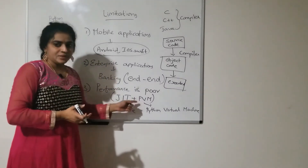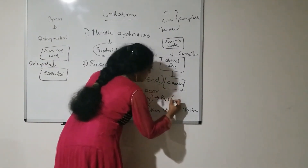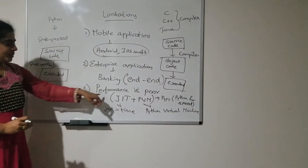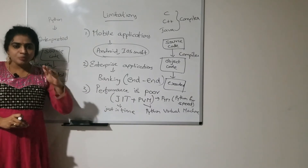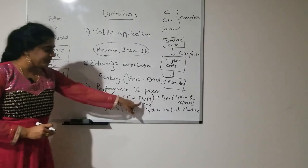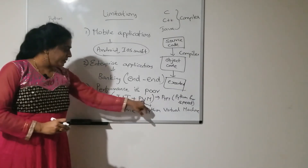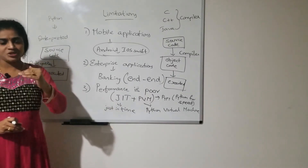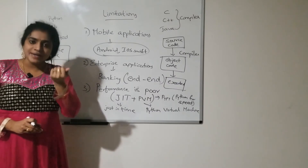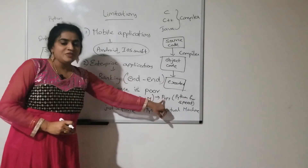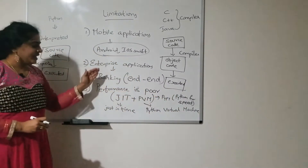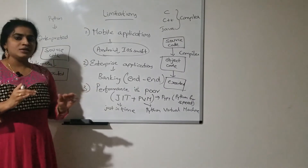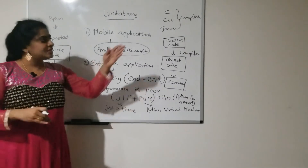This JIT with PVM — JIT with Python Virtual Machine — is called the PyPy version of Python, which is Python for speed. With respect to performance in Python, performance is poor, and to overcome that, the JIT compiler with PVM is used. Instead of executing step by step, a set of instructions is executed at a time. Even though the JIT compiler concept somewhat solves performance issues, Python is still not as good with respect to performance compared to other languages like C, C++, and Java.